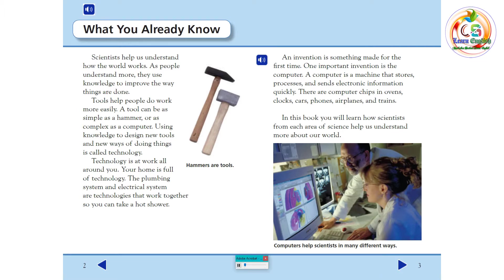An invention is something made for the first time. One important invention is the computer. A computer is a machine that stores, processes, and sends electronic information quickly. There are computer chips in ovens, clocks, cars, phones, airplanes, and trains.